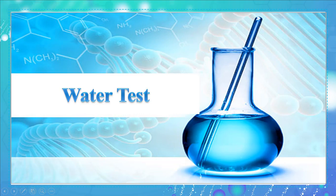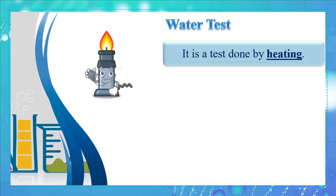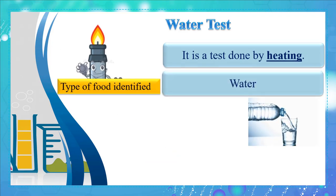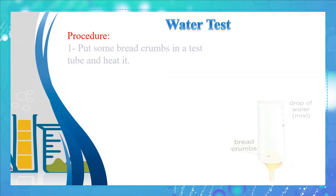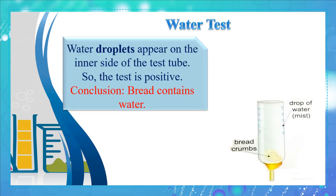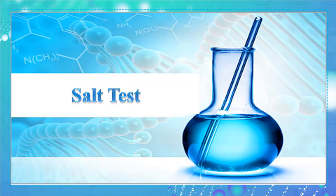Let's proceed with the water test. It is a test done by heating. The type of food identified is water. Procedure: put some breadcrumbs in a test tube and heat it. Observe the result. Water droplets appear on the inner side of the test tube. The appearance of water droplets is the expected result, so the test is positive and we conclude that bread contains water.